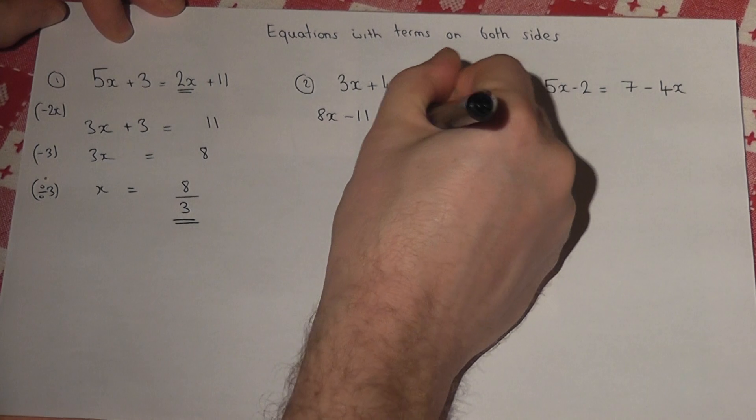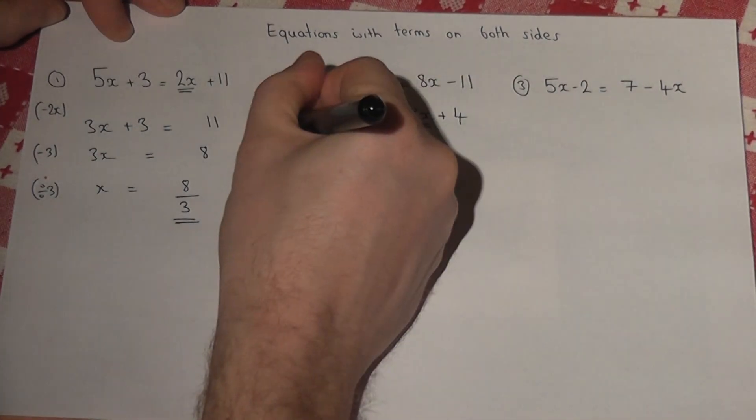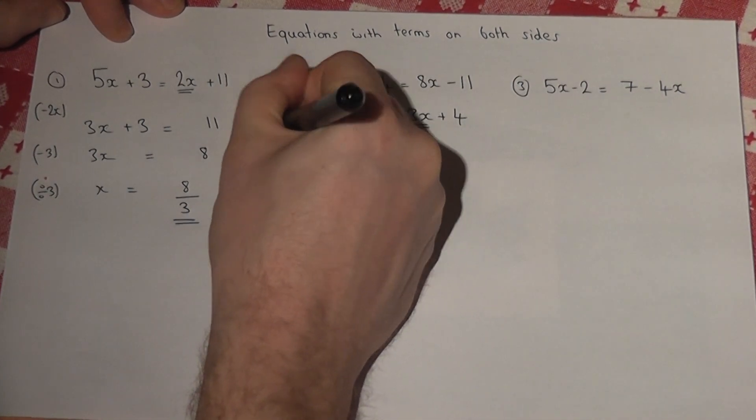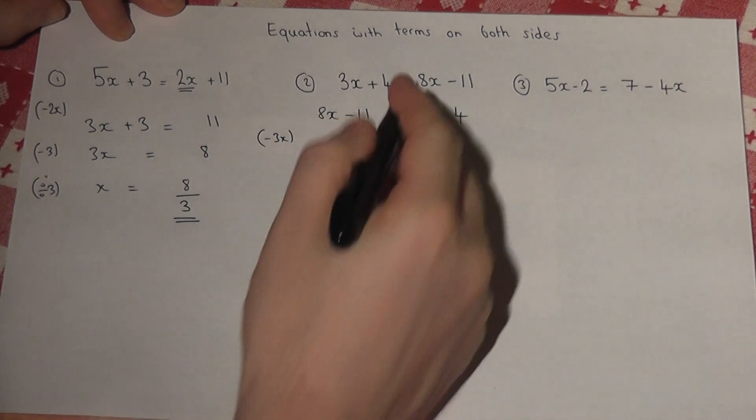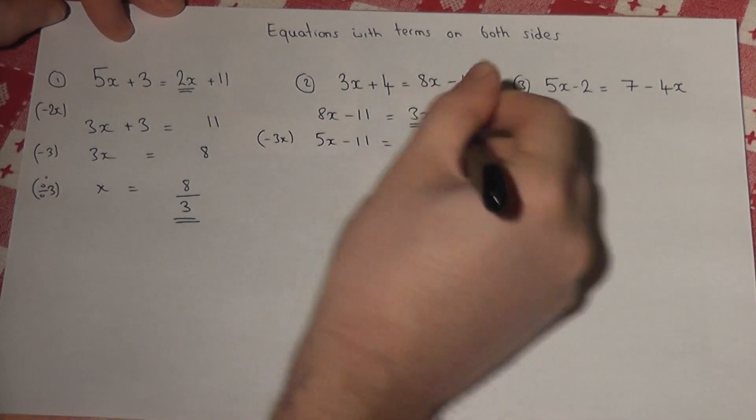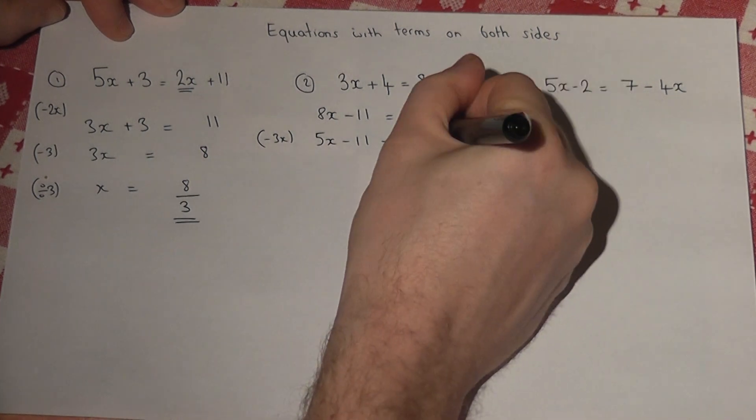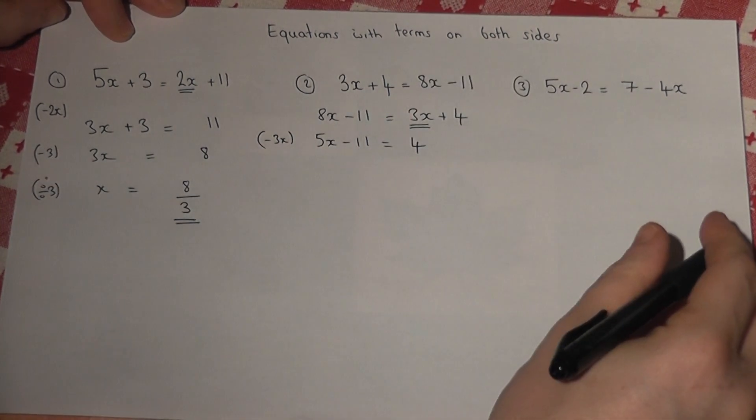So there's a plus 3x there, so I begin by taking 3x away. So this becomes 5x. This cancels off, so I'm left with a 4 on the right hand side.